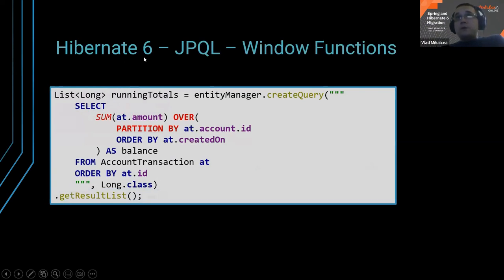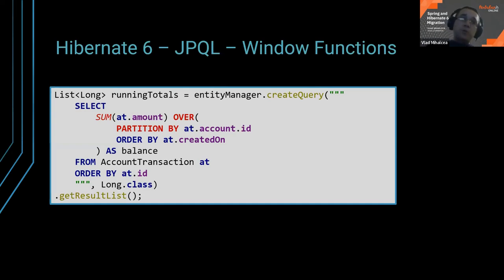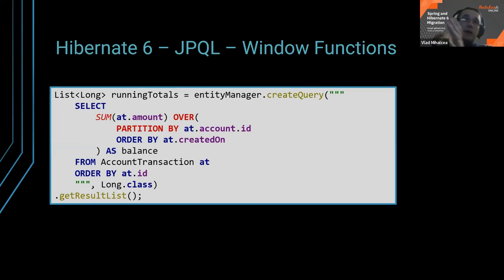For instance, in Hibernate 6 you can have window functions in JPQL and Criteria API. Why would you want to use window functions? Because they're very useful. For example, this is a cumulative sum. If you're using GROUP BY, that's a reduction operation — it reduces the result set to one record per partition. But a window function doesn't do that: it retains the original result set and adds new columns with aggregations like cumulative sum.